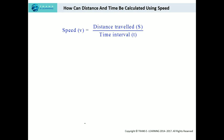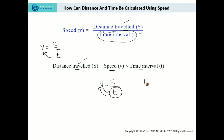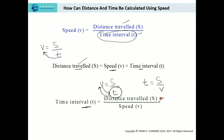Now let us see how distance and time can be calculated using speed. The formula for speed is: speed equals distance upon time. To calculate distance using speed and time, multiply speed by time — so distance equals speed multiplied by time. To calculate the time interval using speed, rearrange the formula: time interval equals distance traveled divided by speed. These are the formulas for finding distance and time using speed.